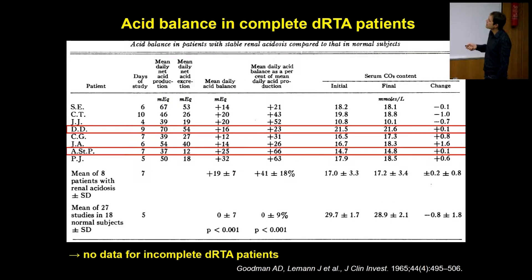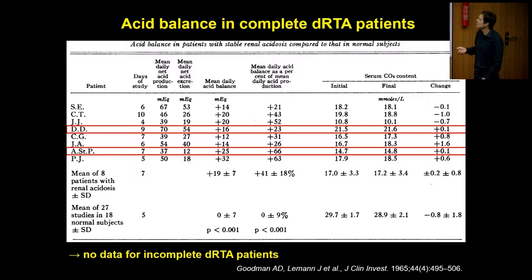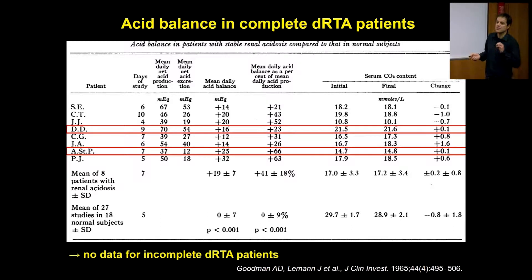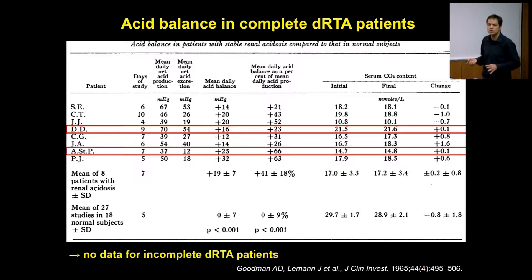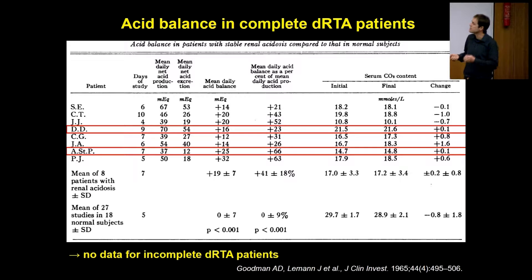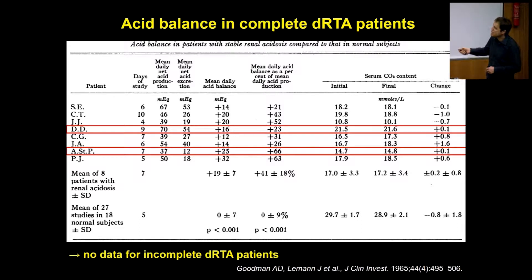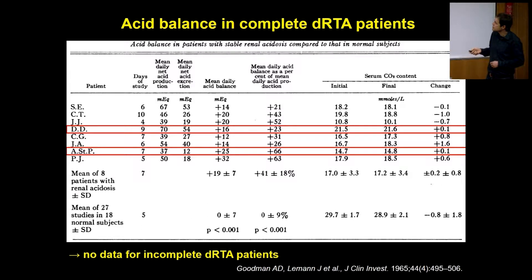This is a beautiful study done by Jack Lemmon and coworkers in 1965. Unfortunately, maybe with the exception of the Dallas group, nobody does such meticulous balance studies in patients with renal acidosis anymore. Going back to check individual patients DD and ASTP, these were really patients with distal tubular acidosis. Jack also did a beautiful paper in 2000 for proximal tubular acidosis in Kidney International. Patients with complete DRTA are in positive acid balance — something we always assumed, but he showed it directly. We have no data on incomplete DRTA; nobody has done that. We assume they are in acid balance compared to complete DRTA patients, but we don't know.